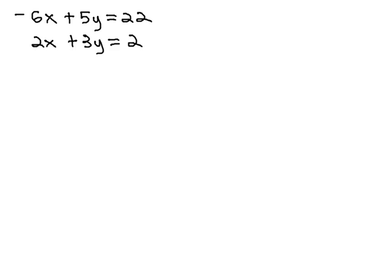In this video, we're going to solve the system of equations negative 6x plus 5y equals 22, and 2x plus 3y equals 2, using the elimination by addition method.